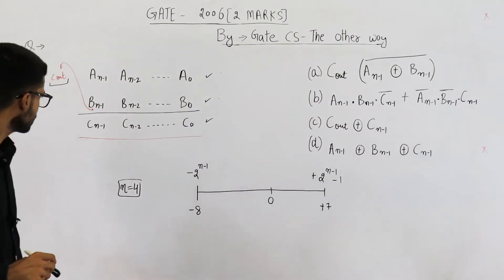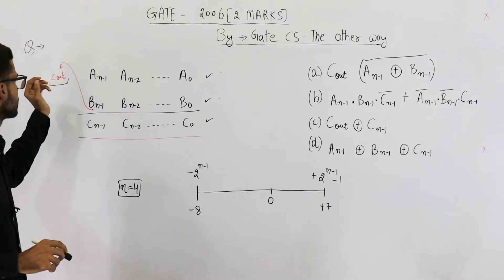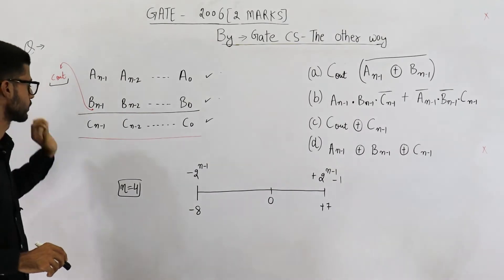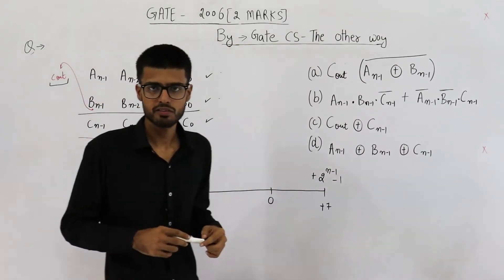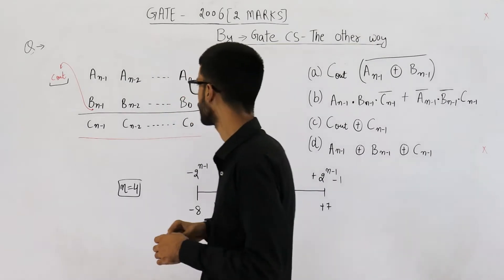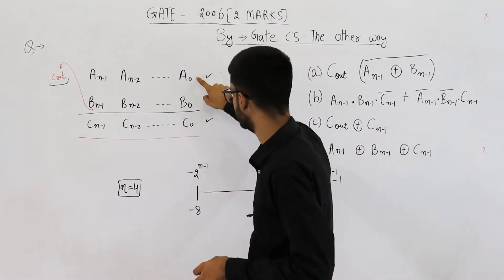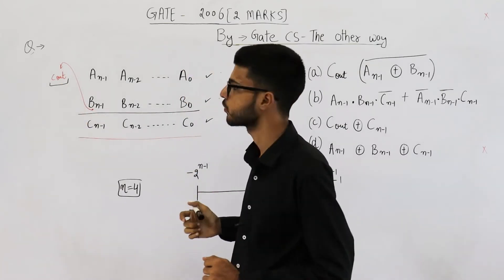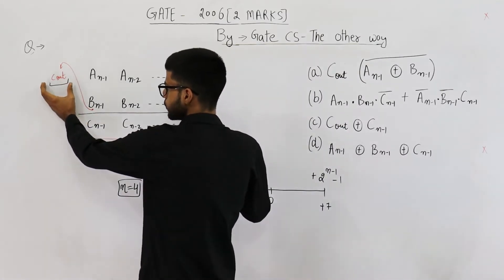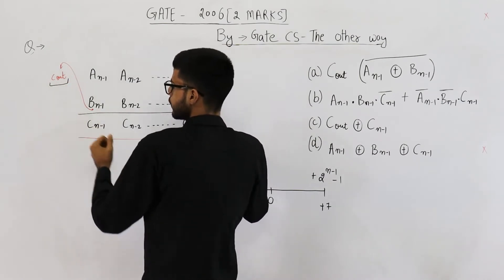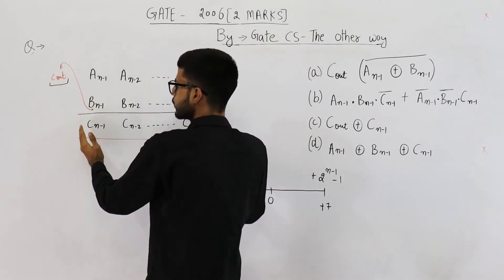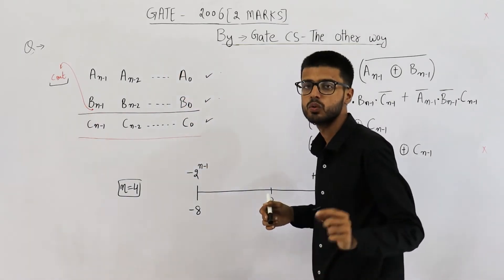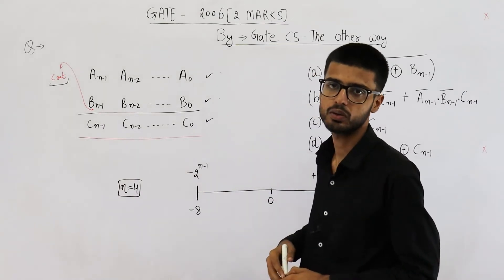The last stage generates carry C out — that is the final carry of this addition. Whenever you have an overflow, overflow means when you add two n-bit numbers the sum is of n plus 1 bits. That is the case of overflow. That means there is a possibility that sometimes you need to include this C out in your answer, because the answer cannot be represented in n bits — we need n plus 1 bits. This is overflow.